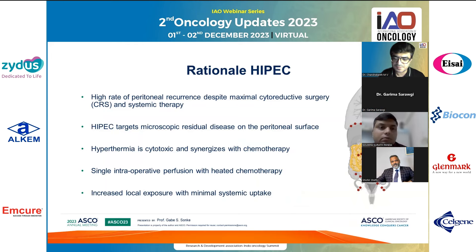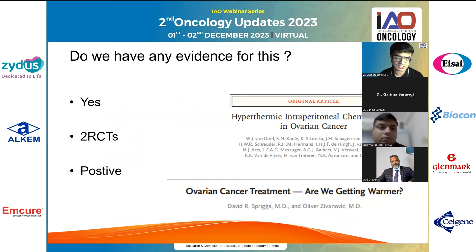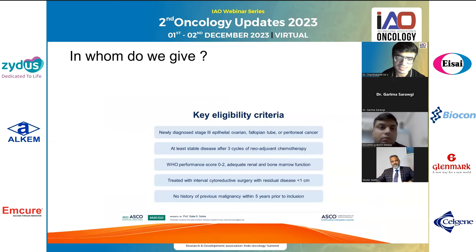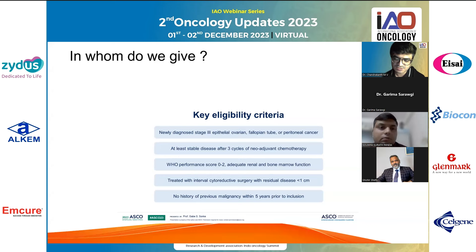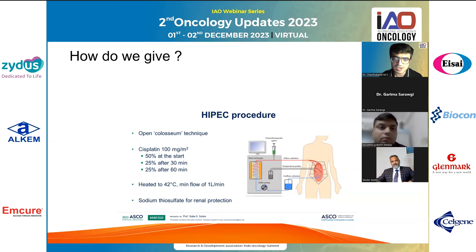Do we have clinical evidence for HIPEC showing positive signals? Yes — there are more than two randomized controlled trials addressing HIPEC in advanced ovarian cancer. It can be given to newly diagnosed patients and in the recurrent platinum-sensitive setting — at least stable disease after three cycles of neoadjuvant chemotherapy, with good performance status, treated with interval cytoreductive surgery, residual disease less than one centimeter, and no history of previous malignancies.